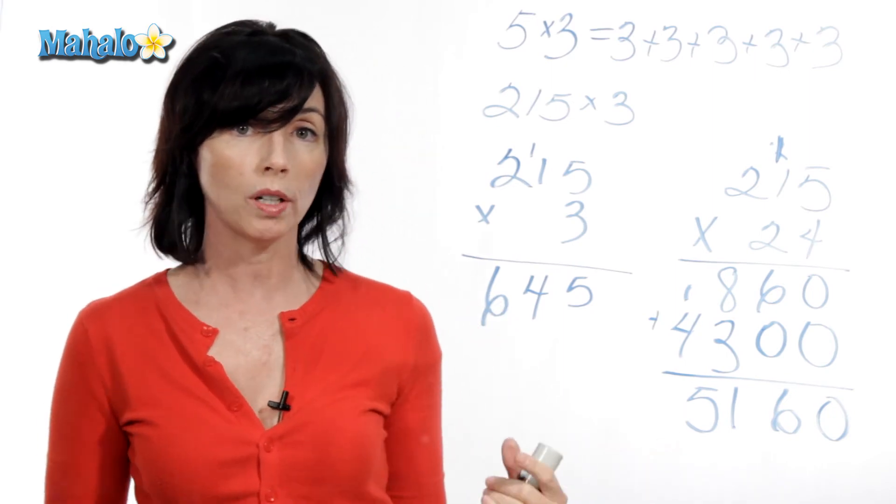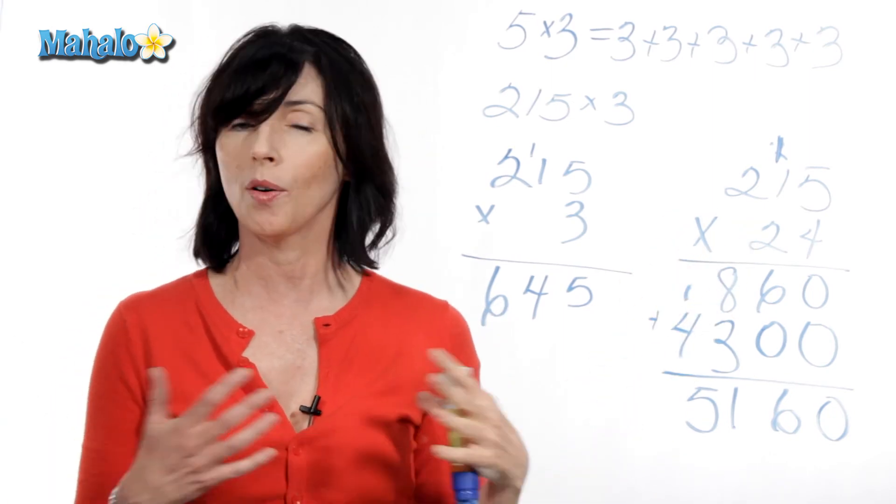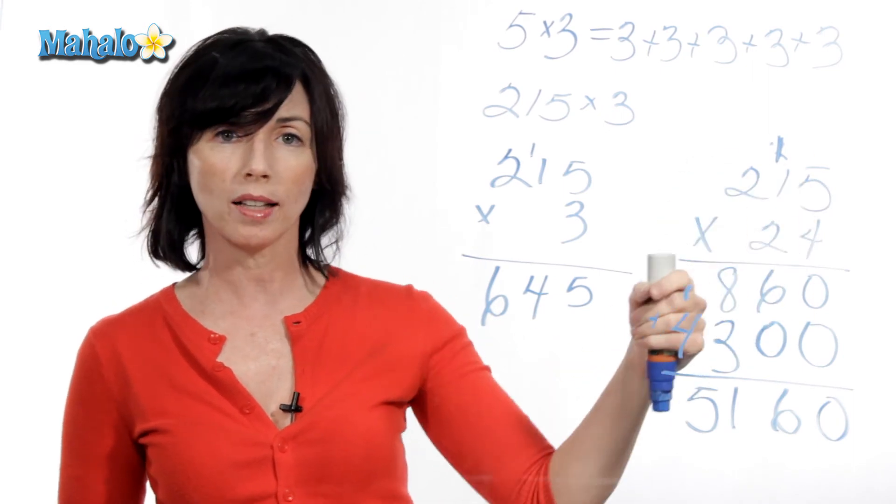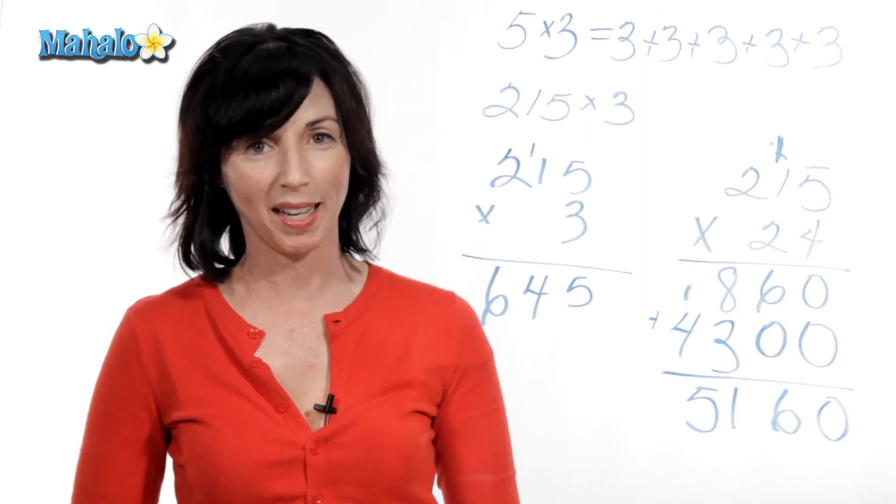This algorithm will work if you have two digit, three digit, four digit, five digit, however many digits you have, this will work. Just make sure you get everything lined up correctly, and go for it. And that's how you do basic multiplication.